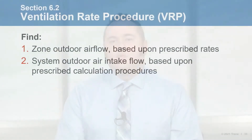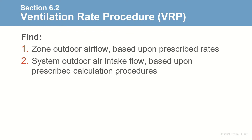The ventilation rate procedure is most widely used and where we're going to spend the majority of this program. It prescribes zone level outdoor air flow rates and the calculation procedures needed to find the zone and system level outdoor air flow rates. For this reason, the ventilation rate procedure is used or referenced in the mechanical codes, other ASHRAE standards, LEED, and other building standards. Later in this program, Chris will discuss the indoor air quality procedure and John will discuss the natural ventilation procedure.